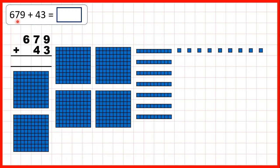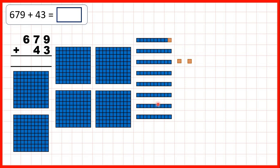Then we started with 679: that's 6 hundreds, 7 tens, and 9 ones. We were adding 43, so first we add 3 ones. Doing that gives us 12 ones, but we can regroup 10 of these ones into one 10, so let's put that above our tens blocks. Notice we have one 10 that we've made, and we have 2 ones left over. So 9 plus 3 is 12, but we write the first digit above the next place value column along because we can exchange it.